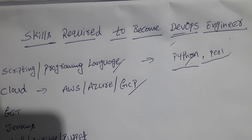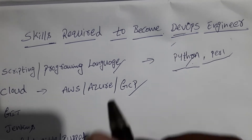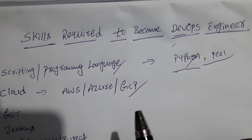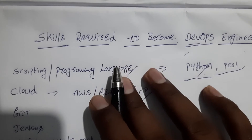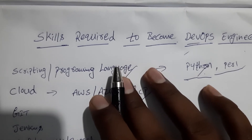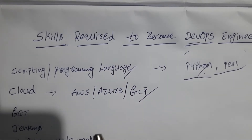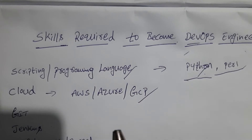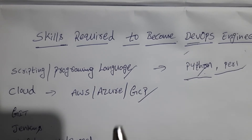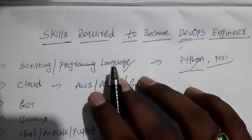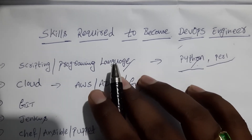From design through the development process to production support. We can simply say that DevOps is an IT mindset that encourages communication, collaboration, integration, and automation among software developers and IT operations, in order to improve the speed and quality of delivering software.